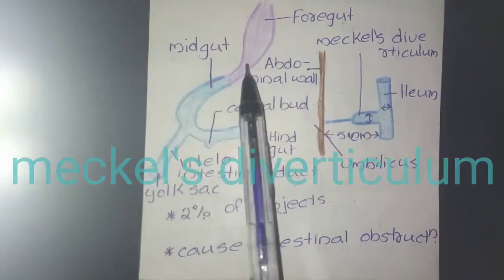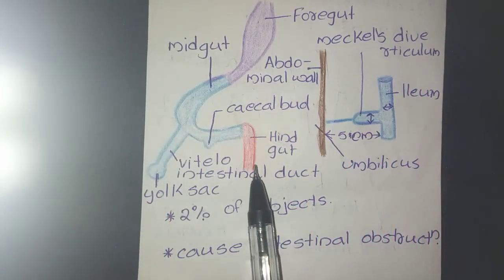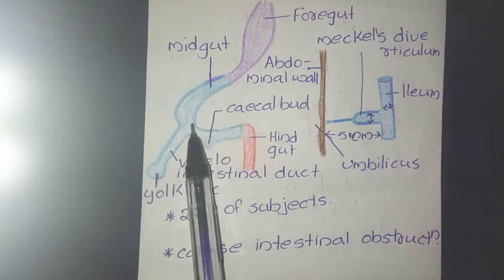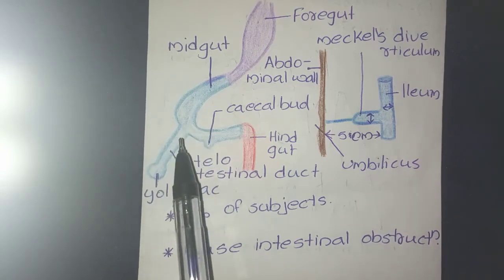In the embryonic stage we can see the foregut, midgut and hindgut. The midgut is connected to the yolk sac by a vitelo-intestinal duct which we can see here.